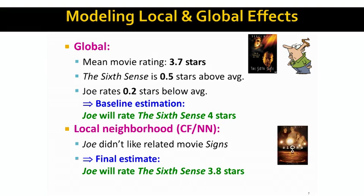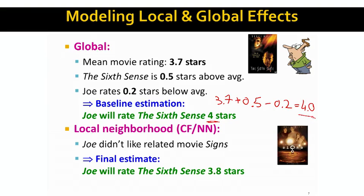So: 3.7 is our baseline. A movie above average by 0.5 stars gives 4.2, but Joe is critical and rates 0.2 stars below average — so 4.2 minus 0.2 equals 4.0. Our prediction for how much Joe will like the Sixth Sense is four stars: 3.7 + 0.5 - 0.2 = 4.0. This very crude global prediction is actually quite useful.